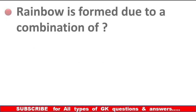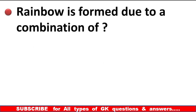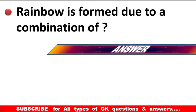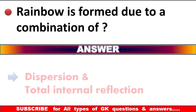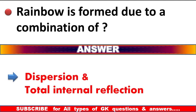Rainbow is formed due to a combination of? Answer: Dispersion and total internal reflection.